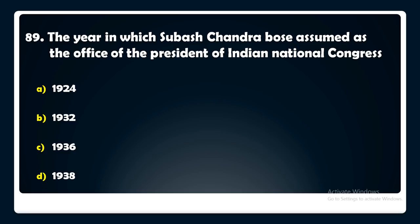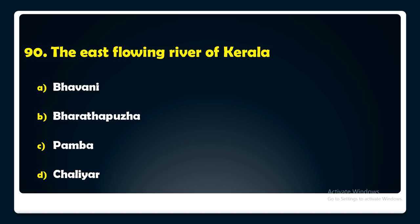The east-flowing river of Kerala is — Bhavani, Bharathapuzha, or Pambar? The answer is: the east-flowing river of Kerala is Bhavani.